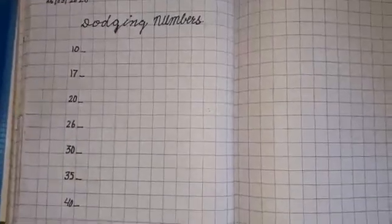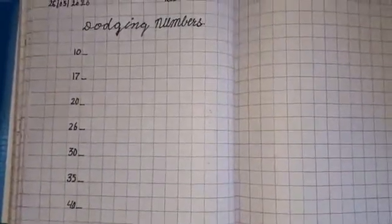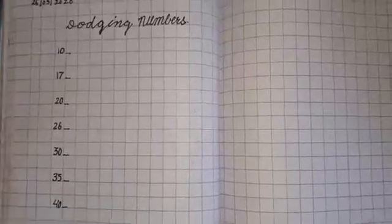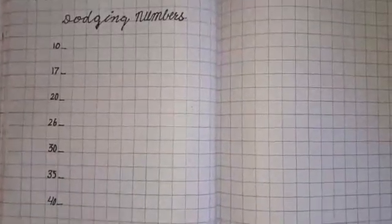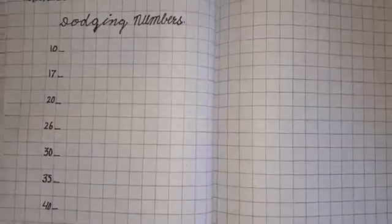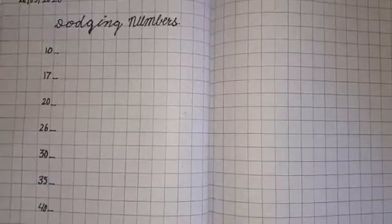Dodging numbers are random. Do you know the meaning of dodging? Dodging means also random. Dodging numbers are random, that is not in proper serial order. Some numbers may be missing, for example one, five, twelve, in this way.